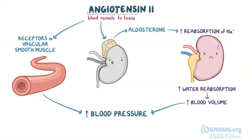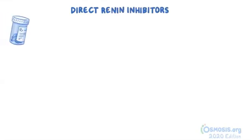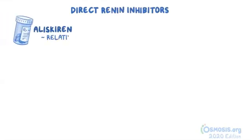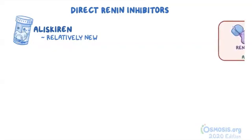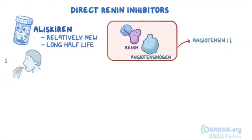There are three main classes of medications that work against or antagonize the RAS. First, there are direct renin inhibitors such as aliskiren, which are relatively new compared to other antihypertensives. Aliskiren binds really tightly to the active site of renin enzymes. This blocks angiotensinogen from binding, so angiotensin 1 levels fall. Aliskiren has a long half-life, so one tablet taken orally daily is enough.